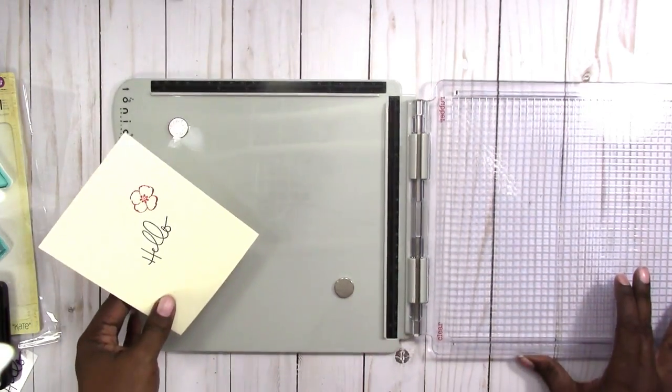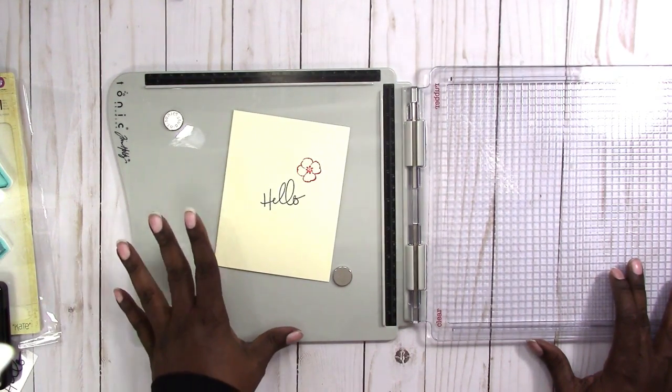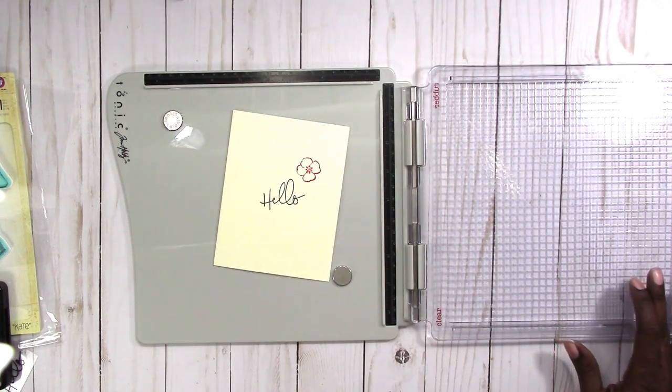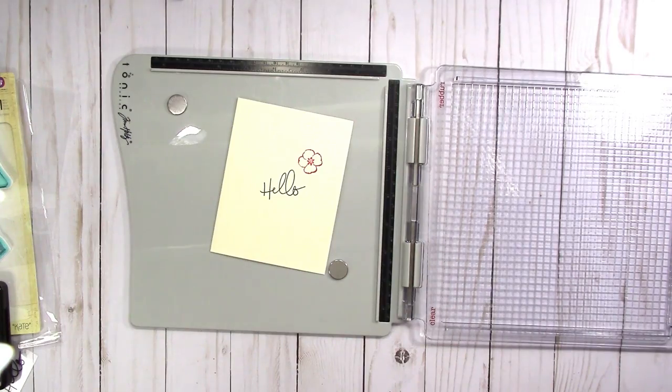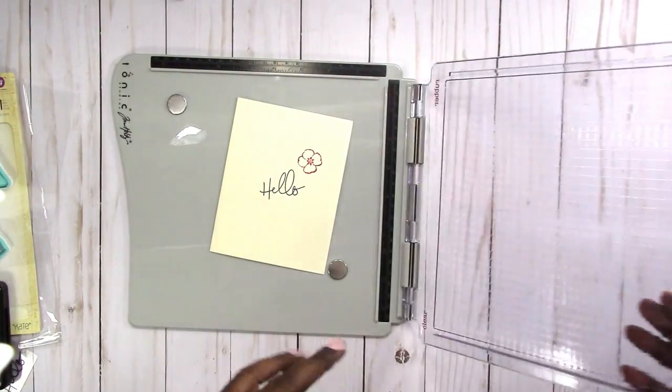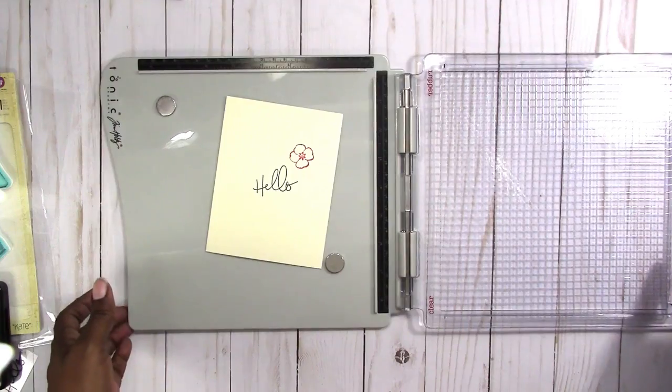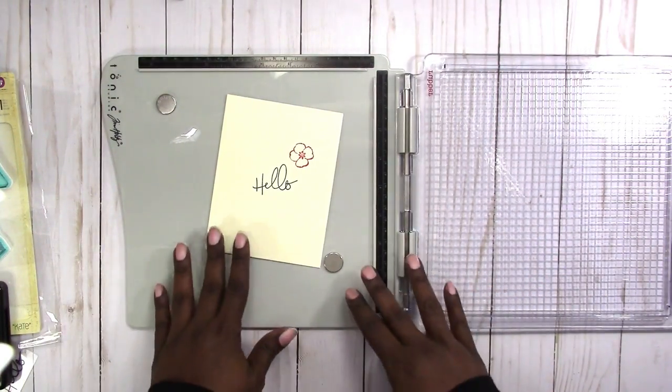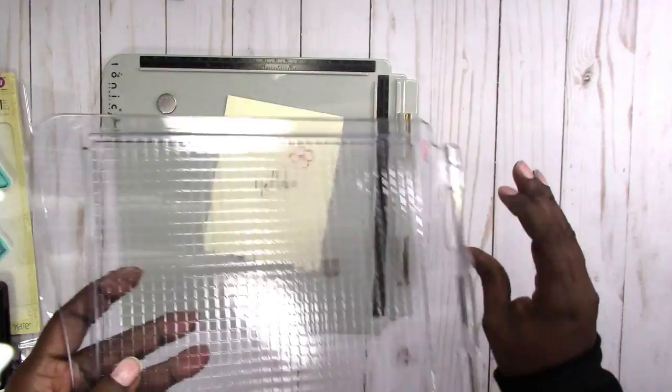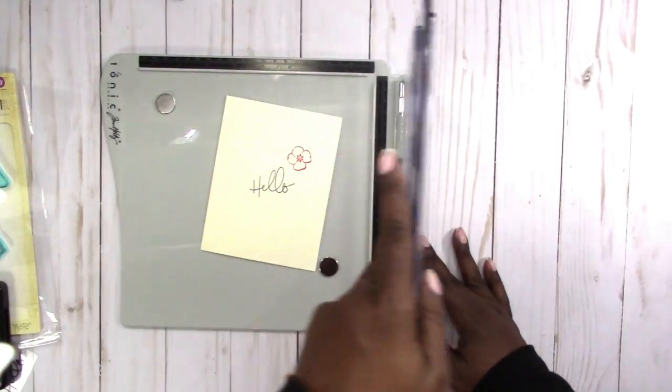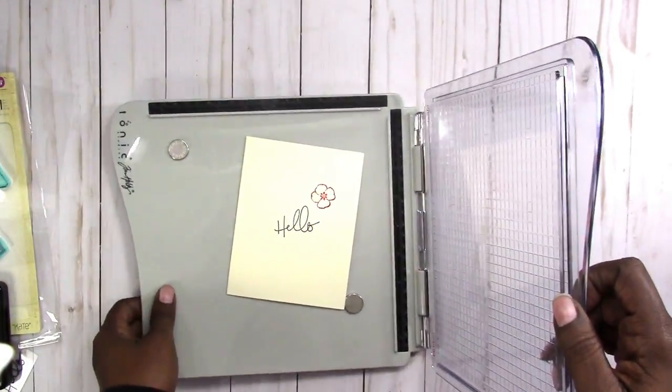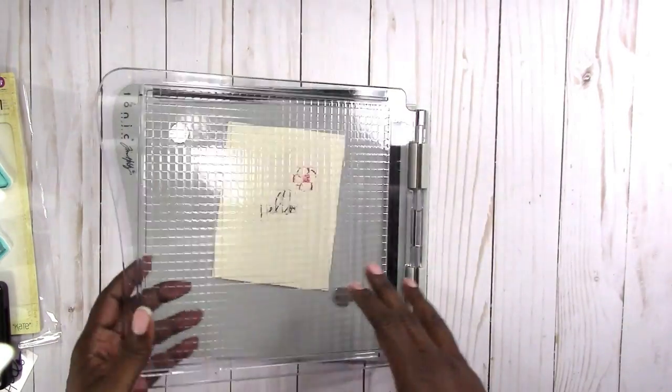So overall, I really like this stamp platform much better than the We R Memory Keepers, and I haven't really used the Hampton Arts one. To say, knowing what I know now, this would have been my first choice for a stamp platform or stamp press. It has the best of both worlds. It's heavy-duty. You can use pretty much any size paper in it. You can use clear stamps, you can use rubber stamps. It's easily adjusted for either one.